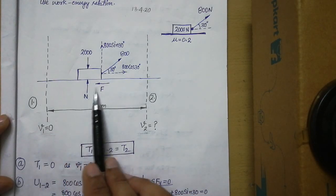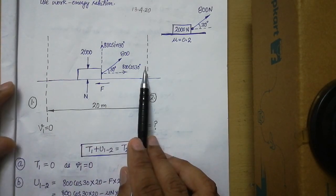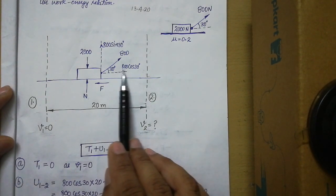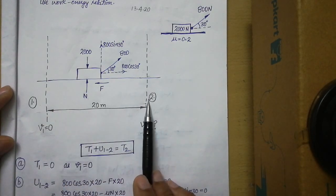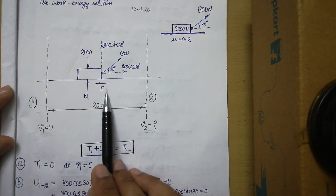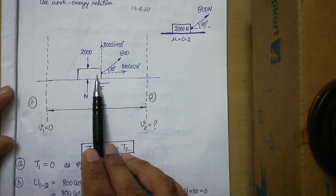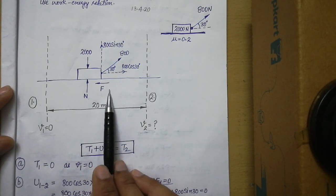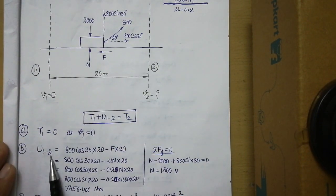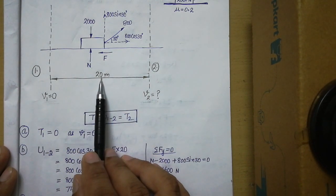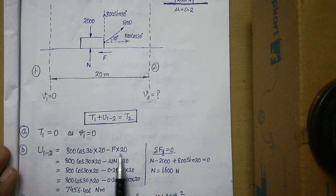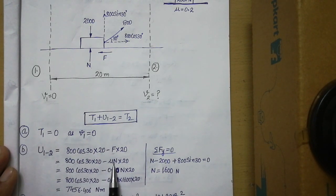Only these two horizontal forces are responsible for the work done on the object, causing motion towards the right. To find the work done from Stage 1 to Stage 2, we multiply each force's magnitude by the distance traveled. The component 800 cos 30 acts along the direction of motion so its work done is positive, while the frictional force acts opposite to motion so its work done is negative. Work done is: 800 cos 30 × 20 minus friction force × 20.